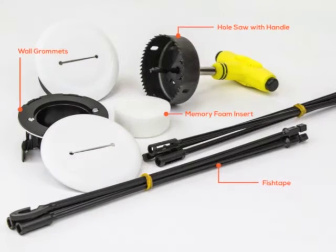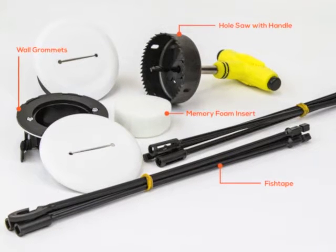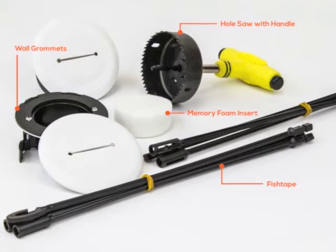The kit includes two grommets, two faceplates, two air-free memory foam inserts, a fish tape, and a hole saw.